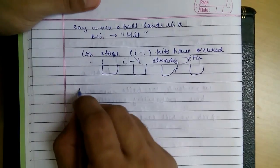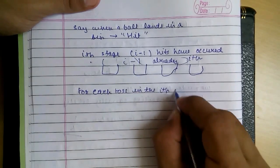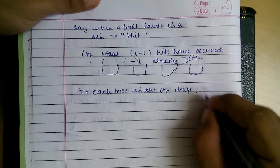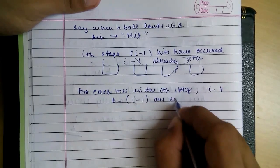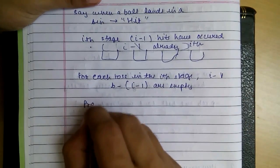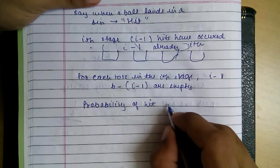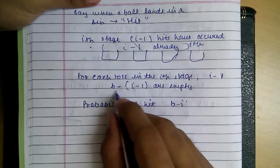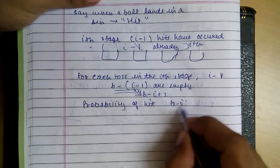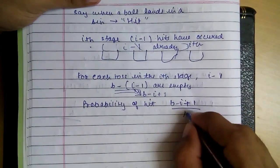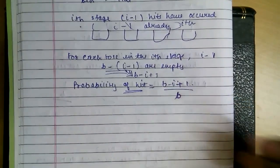So for each toss in the ith stage, as i-1 bins contain balls, B minus i-1 are empty. So the probability of getting a hit, that is the ball landing in a new bin, probability at ith stage is B minus i plus 1 by B. So probability of hit at ith stage is the empty bins by the total.